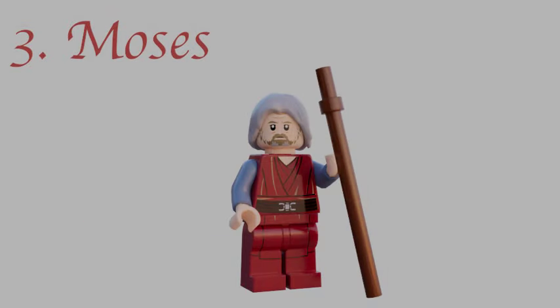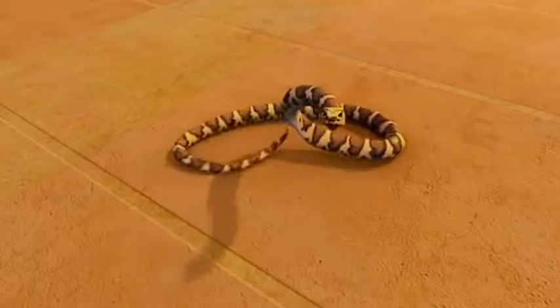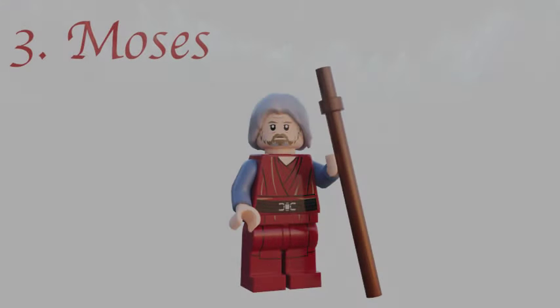Day three is Moses, a prophet of God sent to bring his people back to the promised land, as they were slaves in Egypt. Fun fact: Moses's staff can turn into a snake, split the Red Sea into two, and allow walking on dry land — all by the power of God, as long as he stayed close to God.